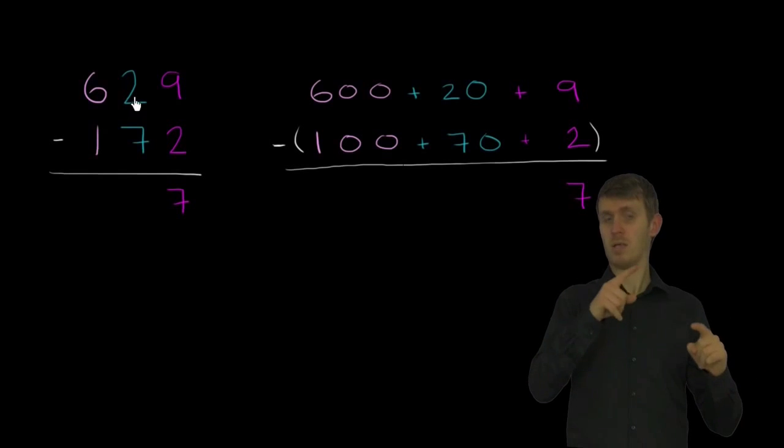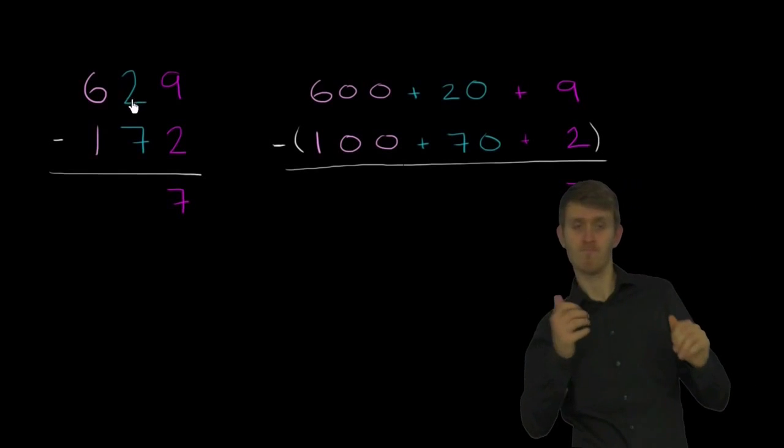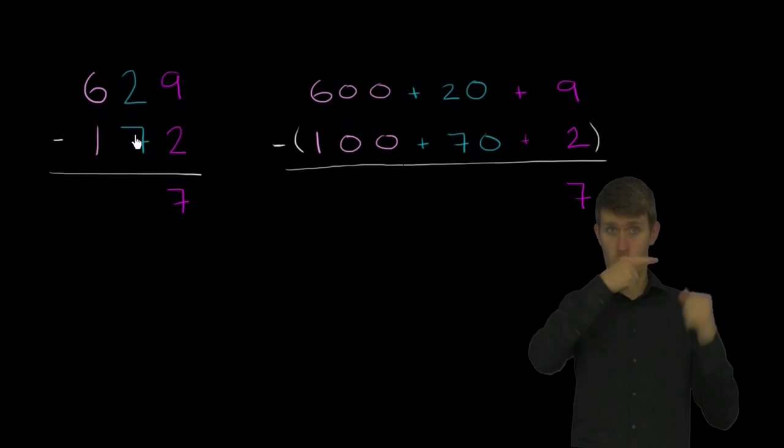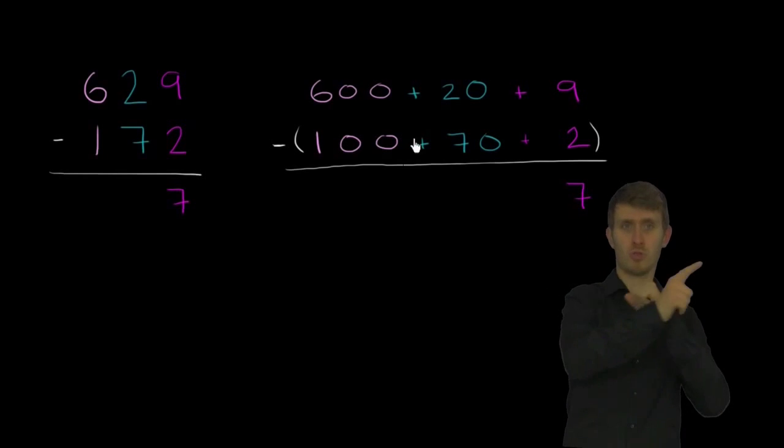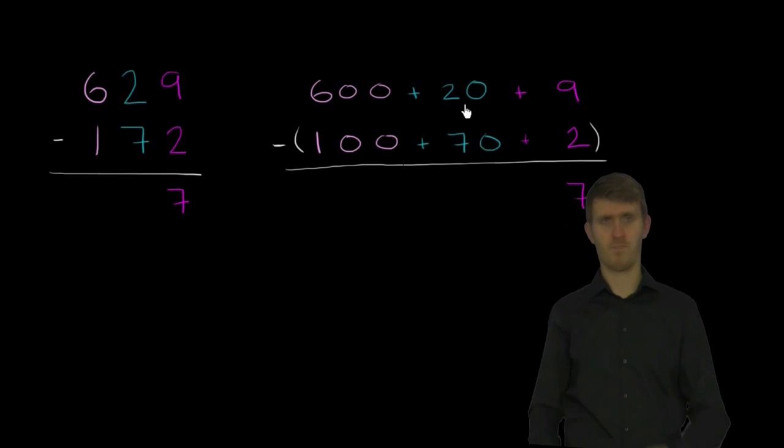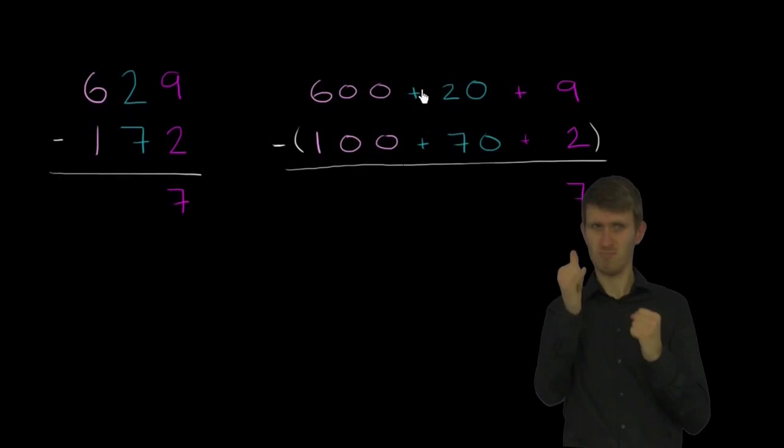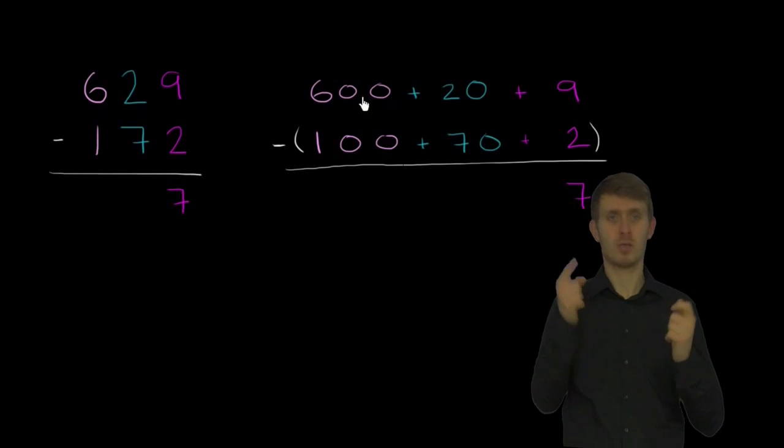Well, luckily, we have something in our toolkit called regrouping, sometimes called borrowing. And that's why this is valuable. When we're trying to subtract the 7 from a 2, we're really trying to subtract this 70 from this 20. Well, we can't subtract the 70 from the 20, but we have other value in the number. We have value in the hundreds place.